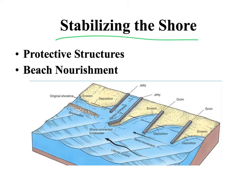Finally, we're going to talk about stabilizing the shore, and that's important because we want to keep our beaches and our shorelines. We can do this two ways — through protective structures or through beach nourishment. The protective structures we can build include a breakwater or a seawall. A breakwater is something solid placed in the way — the waves break upon it, and the area behind the breakwater is sheltered and protected. A seawall is where we build that structure on the shore, allowing the waves to hit something that's not the shoreline itself.